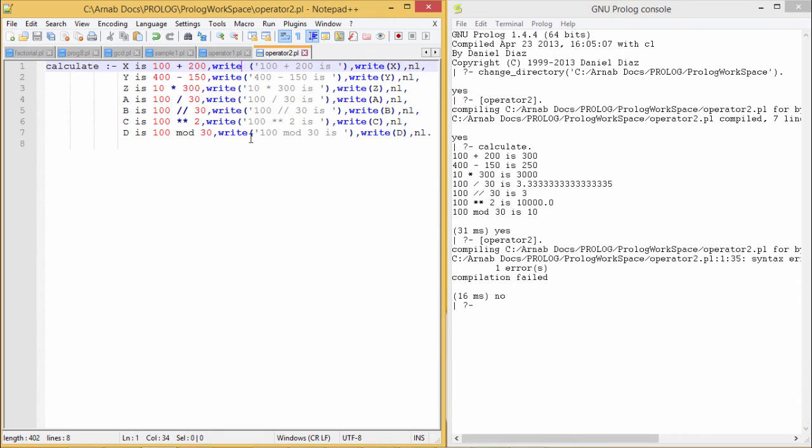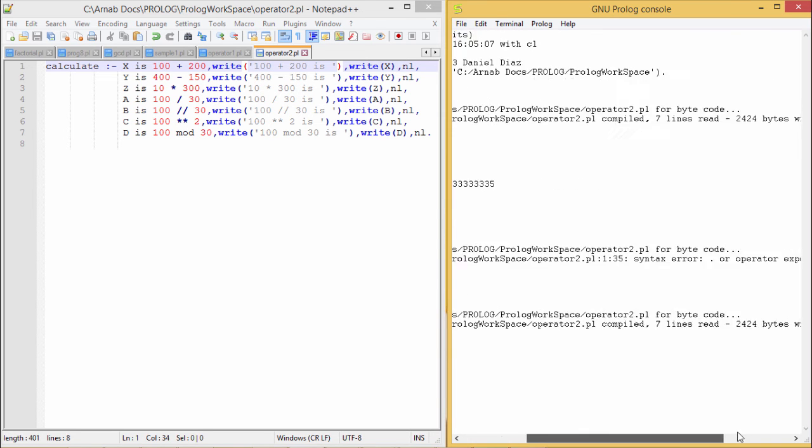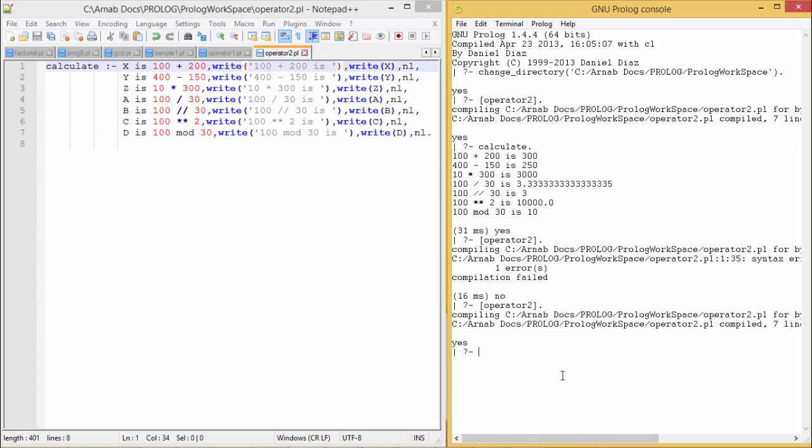I am just eliminating the blank space again, saving my program and compiling and loading the program into the memory again. You see, there is no error generated, but there was a syntax error here. This is the difference you can easily find. And now if I execute my code, it will be running okay.